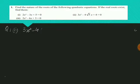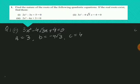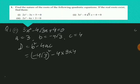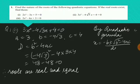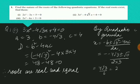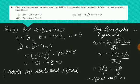Question 1, second part: 3x² - 4√3x + 4 = 0. Here a = 3, b = -4√3, and c = 4. Discriminant D = b² - 4ac = (-4√3)² - 4×3×4 = 48 - 48 = 0. Therefore, the roots are real and equal. By the quadratic formula, x = (-b ± √D) / 2a = (4√3 ± 0) / 6 = 4√3/6 = 2√3/3. So the equal roots are both 2√3/3.